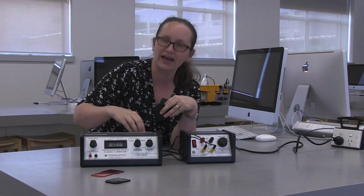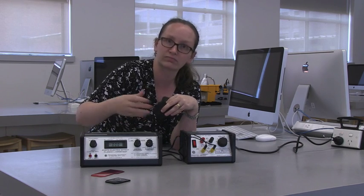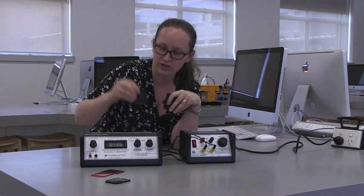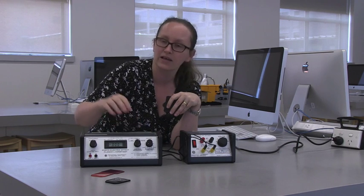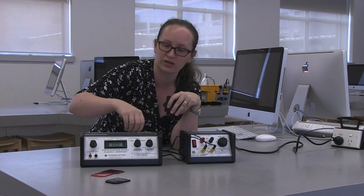So in the first part of the experiment, you're going to be using these apertures to vary the number of photons that are travelling from the light and hitting the cathode inside this photoelectric box. So you'll be placing these between the light and the photoelectric box.